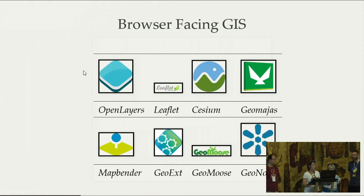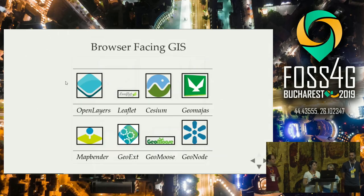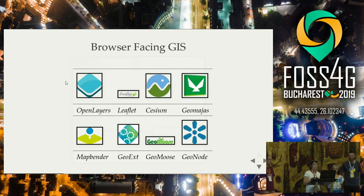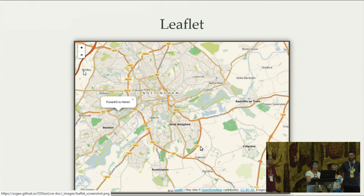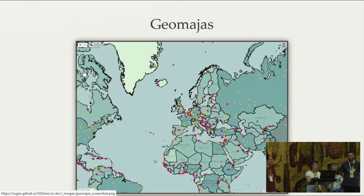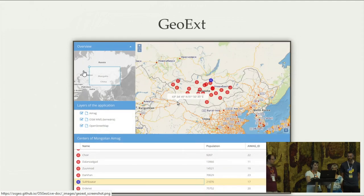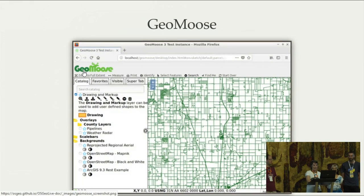For browser-facing GIS applications, if you want to go from your desktop to the web, you find applications that offer editing functionality or just view functionality. We have lightweight scripting applications like OpenLayers or Leaflet, Cesium for 3D visualization, and several applications offering GeoPortal frameworks like GeoMajas and MapBender. New in the group is GeoExt, thanks to Seth who is here in the audience. We also have GeoMoose and GeoNode, which handles metadata and the whole publishing process.